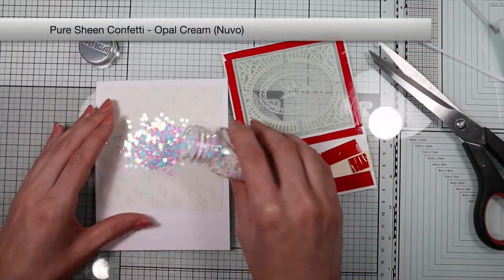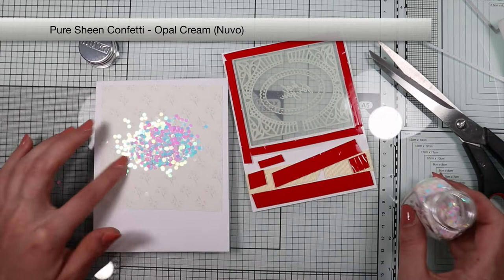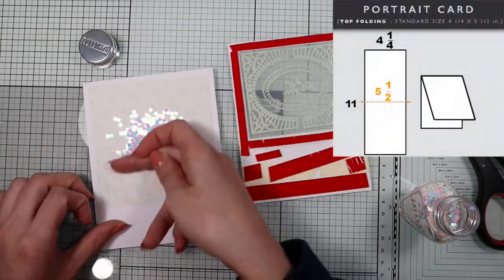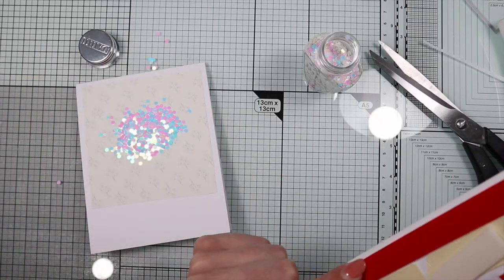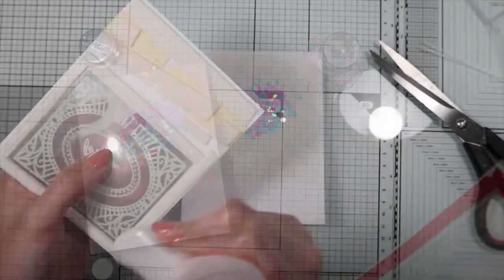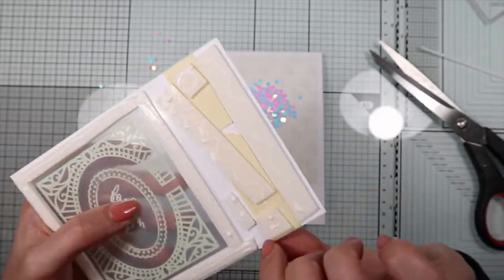I put the confetti from the kit on the top of my card base precisely in the area where the window will be. Then I definitely glue the main panel on the card base.